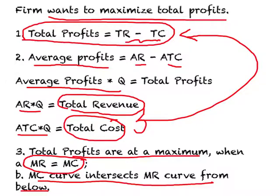This is called marginal analysis. For example, consider whether you should attend a lecture on economics. You would figure out the benefit of coming to class and compare it to the cost. If the benefit outweighs the cost, you attend; otherwise, you don't. This is called marginal decision-making, and this is what we will focus on now.